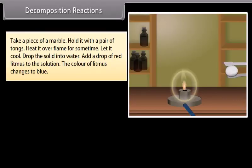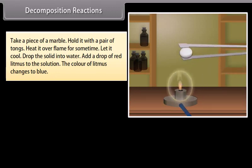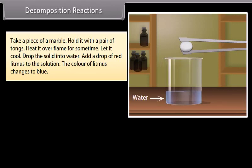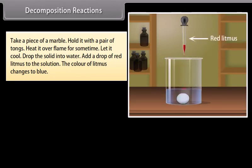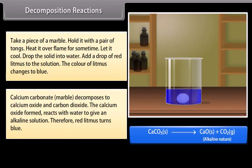Activity. Take a piece of marble, hold it with a pair of tongs, and heat it over a flame for some time. Let it cool, then drop the solid into water and add a drop of red litmus. The color of litmus changes to blue. Calcium carbonate (marble) decomposes to calcium oxide and carbon dioxide. The calcium oxide formed reacts with water to give an alkaline solution, and therefore red litmus turns blue.